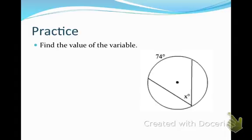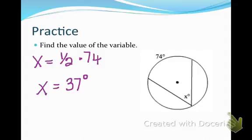Okay, first I want you to find the value of the variable, and our variable is x, it's an inscribed angle. We know that the intercepted arc is 74 degrees, and we also know from our theorem that it's exactly half of that intercepted arc, so it's half of 74 degrees. So that angle is 37 degrees.